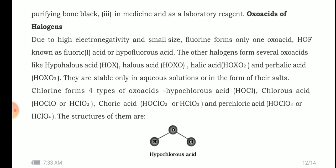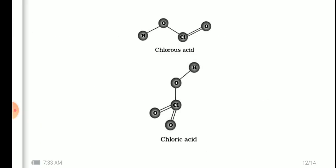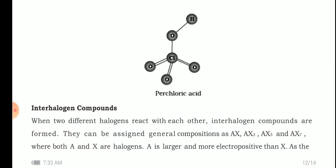The structures of these oxo acids are as follows: In hypochlorous acid, oxygen is in between, attached to hydrogen and chlorine. Chlorous acid has H attached to O, then chlorine attached to a double-bond oxygen. Chloric acid has Cl attached to two double-bond oxygens and one OH. Perchloric acid has Cl attached to three double-bond oxygens and one OH.